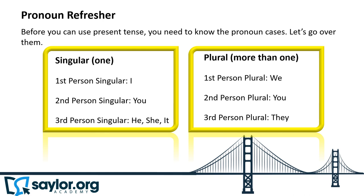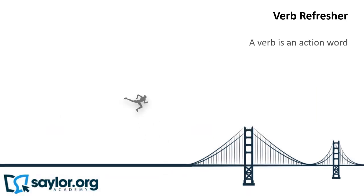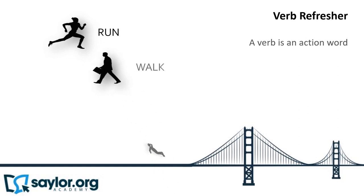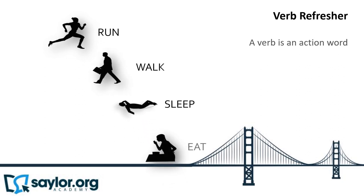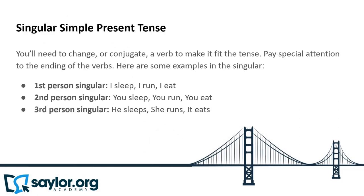Second person singular: you. Third person singular: he, she, it. Plural — more than one. First person plural: we. Second person plural: you. Third person plural: they. Verb refresher: a verb is an action word — run, walk, sleep, eat.